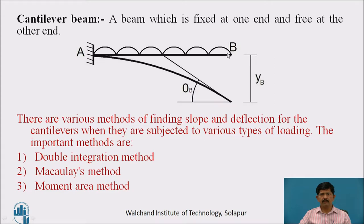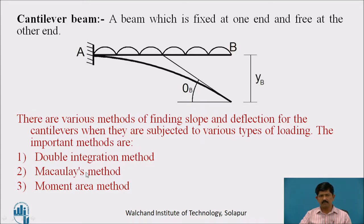The cantilever beam is the beam which is fixed at one end and free at the other end. There are various methods of finding slope and deflection for cantilevers: double integration method, Macaulay's method, and Moment Area method. We will see the double integration method.